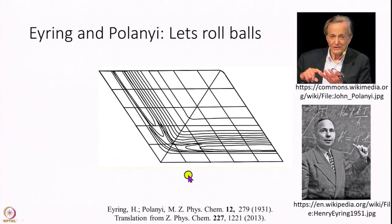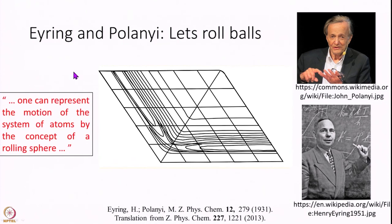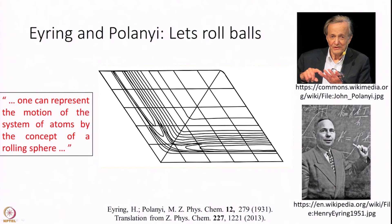Born and Oppenheimer introduced the idea of potential energy surfaces in the late 1920s. Eyring and Polanyi said one can represent the motion of a system of atoms by the concept of a rolling sphere. They said: I have these energy surfaces, however complex they look - this figure is directly from their paper - and let us think of the nuclei as classical particles. They are big and heavy. Electrons are so small in mass that you cannot treat them classically, but nuclei and protons are large enough to think about classically. So Eyring and Polanyi said: I have this potential energy - why not use Newton's laws to think about dynamics on this potential energy surface?